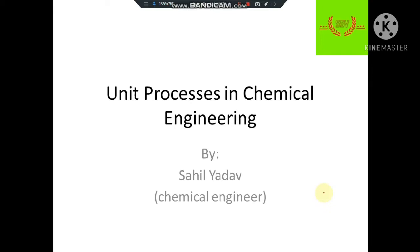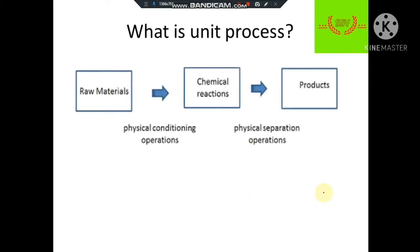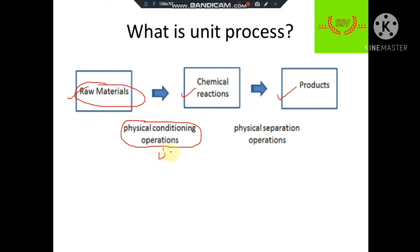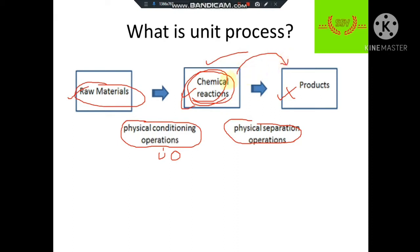Let's start — what are unit processes? This diagram is the basic diagram that every chemical engineer should know. We have raw material, then as discussed in the previous video, we have unit operation process, then we have some chemical reaction, then again unit operation process, and finally we get the product.